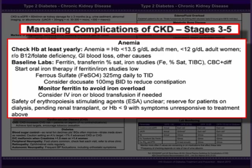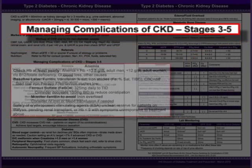Monitor ferritin levels to avoid iron overload. Consider IV iron or blood transfusion if needed to reduce anemia symptoms. The safety of erythropoiesis stimulating agents, or ESAs, is unclear from recent research, and it is recommended until national guidelines are updated to reflect this research that we reserve this treatment for patients on dialysis, for those pending renal transplant, or when the hemoglobin is less than 9 with associated symptoms of anemia unresponsive to the treatments just listed.